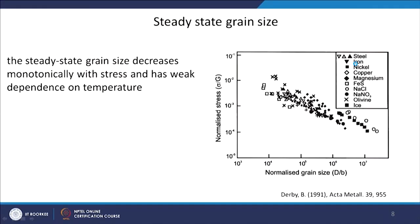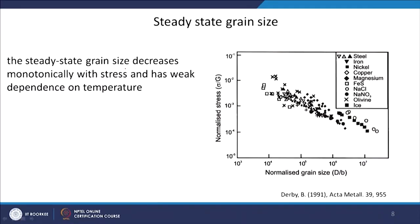Since recrystallization is taking place, it will also affect the grain size of the material. If you measure the steady-state grain size after recrystallization, it decreases monotonically with stress and has a weak dependence on temperature — it is actually strongly dependent on stress. On the x-axis is normalized grain size D divided by the Burgers vector b, and on the y-axis is normalized stress — stress divided by shear modulus G — to bring data from different materials onto one graph.